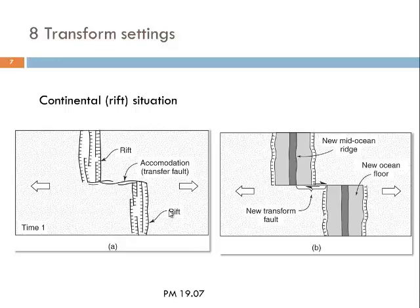In the second year class we talked about the initiation of transform faults in the continental stage, because mid-oceanic ridges start their history as continental rift zones. In a cratonic environment, a rift developing and hitting a pre-existing older structure — or for other reasons showing sidestepping with different segments — will connect these rift segments by a so-called transfer fault, which is nothing else but a transform fault. If continental breakup continues and oceanic lithosphere forms along mid-oceanic ridges, the continental lithosphere will be removed sideways along these transform faults.